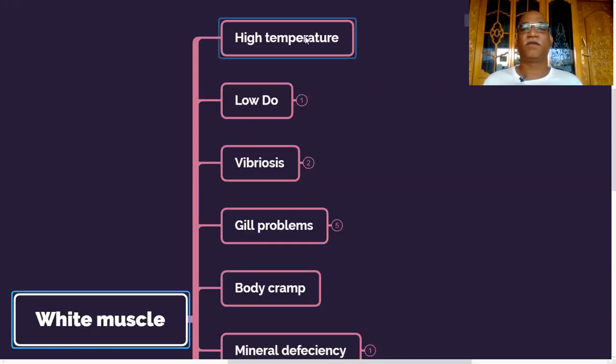The top 10 reasons are: first one is high temperature. If the temperature crosses 35 and beyond 35, you get spontaneous white muscle and mortality. So always you have to take care, the temperature should not cross 34 degrees.